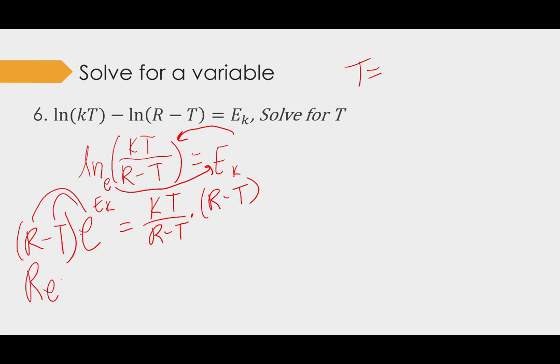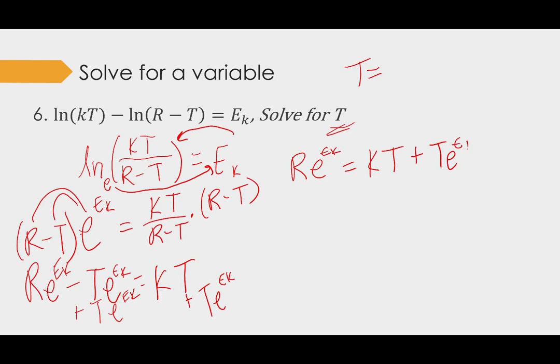So let's reek on this side. R times e to the e sub k minus t. T times e to the e sub k. Right now I have kt on this side. I'm going to, I know I'm trying to get t myself. So I'm going to try to get all the t's on the same side. So I'm going to leave reek on the left. And I'm going to add over t e to the e sub k on both sides. And so I have kt plus t e to the e sub k. Still have t in two places. So I'm actually going to factor out that common number t.